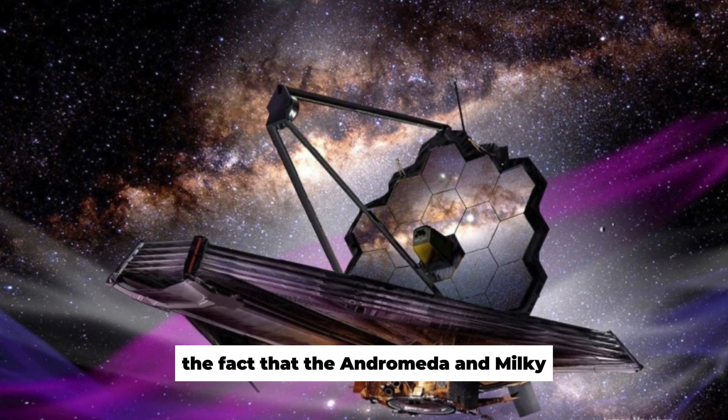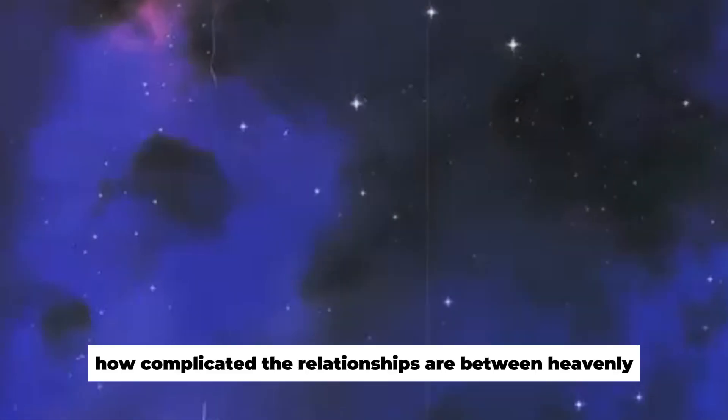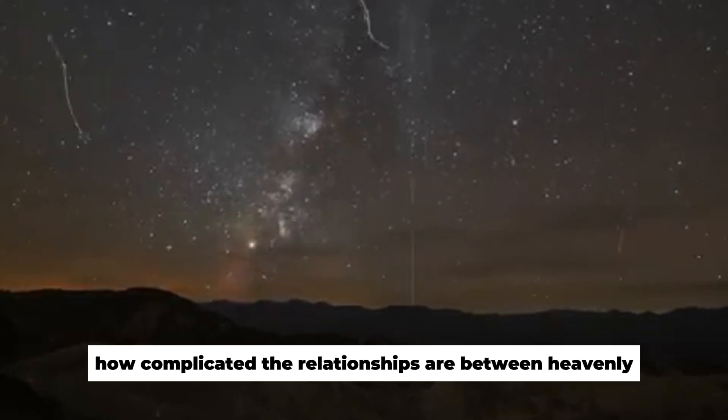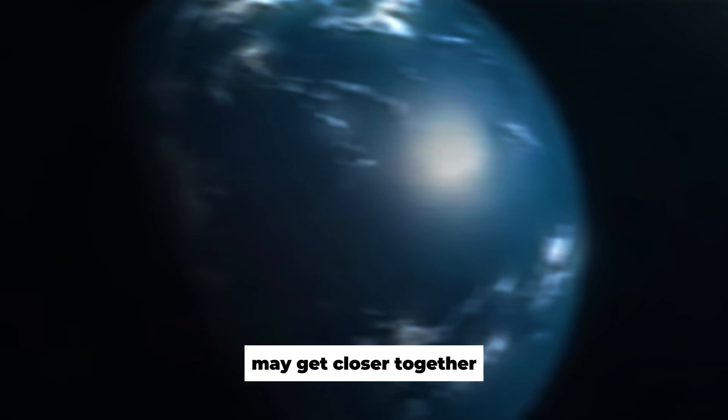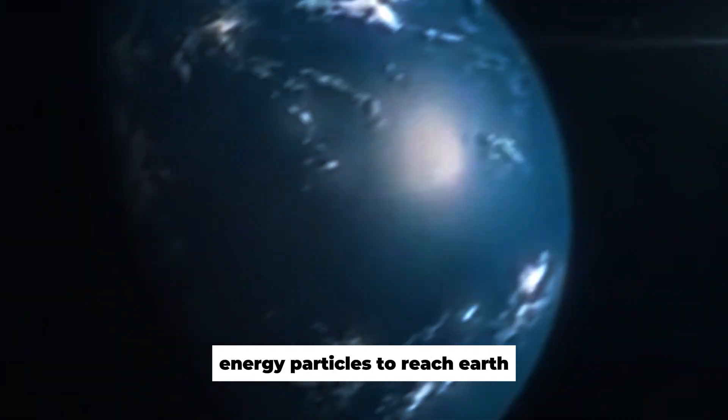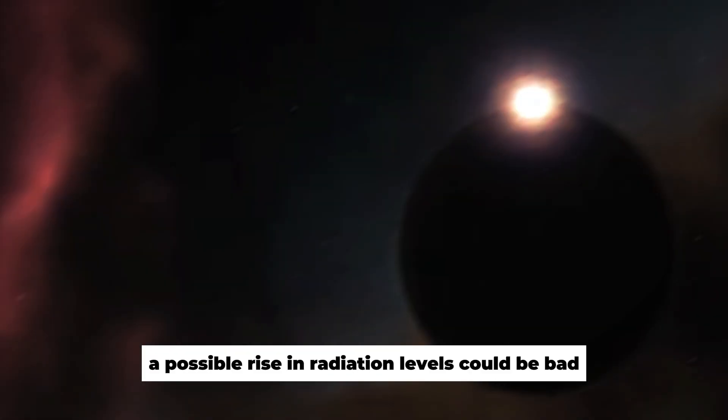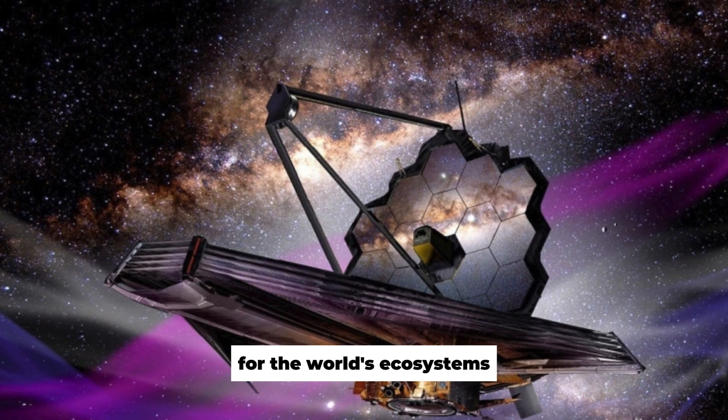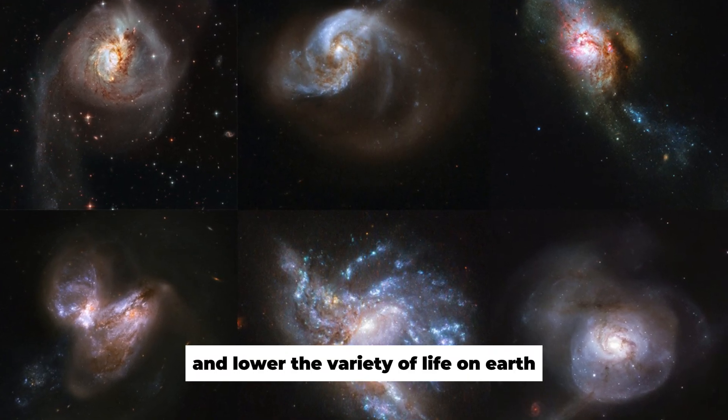The fact that the Andromeda and Milky Way systems have joined together shows how complicated the relationships are between heavenly bodies. As time goes on, the black holes in both galaxies may get closer together, which could make it easier for high-energy particles to reach Earth. This could lead to more cosmic radiation getting through our atmosphere. A possible rise in radiation levels could be bad for the world's ecosystems, because it could cause mutations and lower the variety of life on Earth.